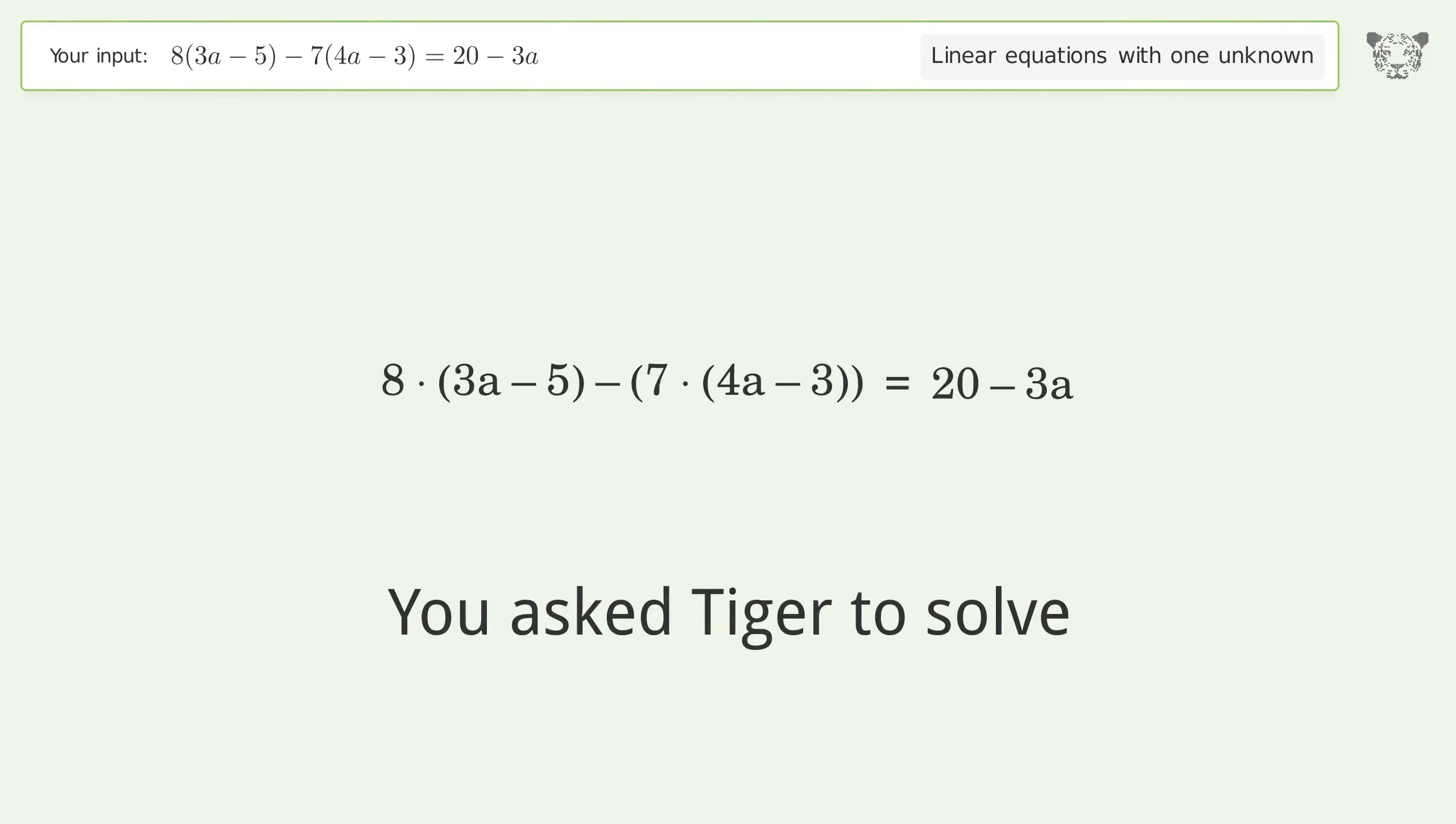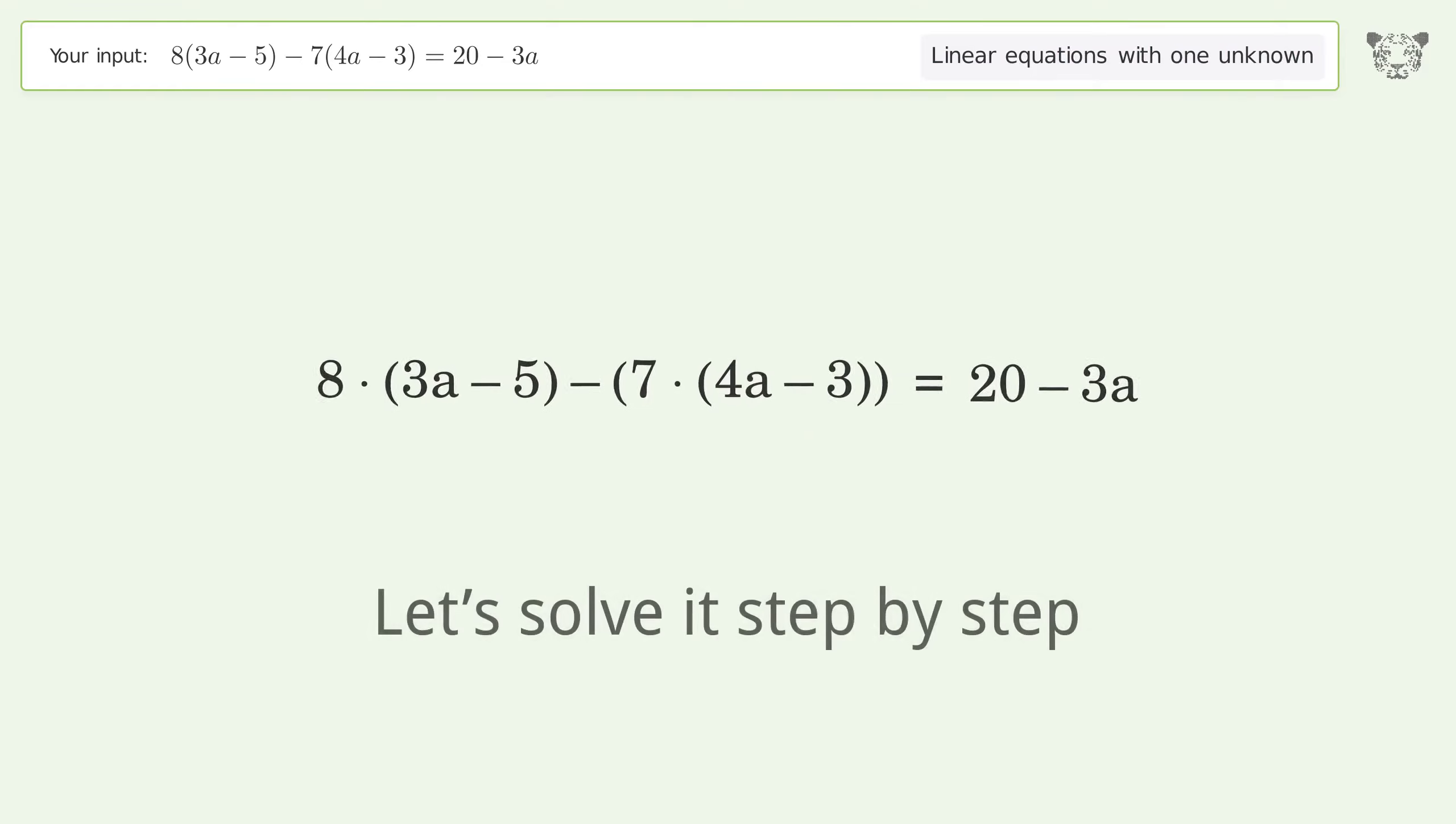You asked Tiger to solve this. This deals with linear equations with one unknown. The final result is a equals negative 39. Let's solve it step by step.